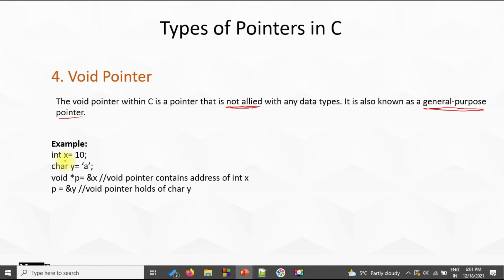For example, 'int x = 10' and 'char y = 'a''. Then 'void *p = &x' — at this point p is storing the memory location of x which is an integer. But in the next line we write 'p = &y', so p is now storing the memory location of y which is of type char. Let's see this in a program — how we can use it and how to dereference a void pointer.